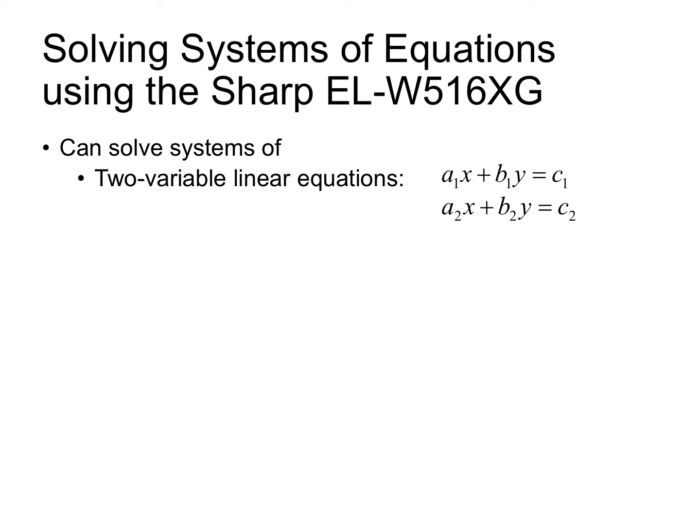Note that we have A1 and A2, which represent the coefficients on the X variable in the first equation and the second equation. B1 and B2 are the coefficients on the Y. C1 and C2 are the constants that the equations are equal to.